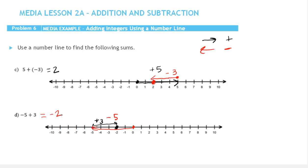Again, this is the difference between 5 and 3. Since we went further in the negative direction — the absolute value of negative 5 is bigger than 3 — that means our answer is going to be negative: negative 2.